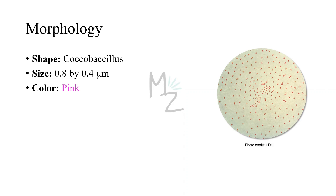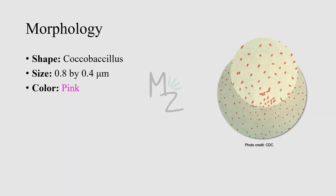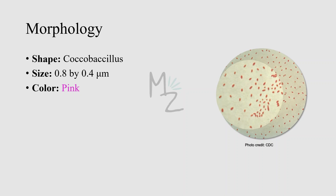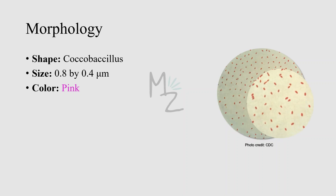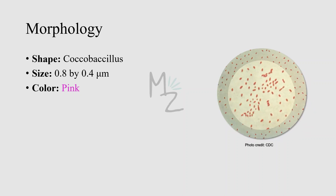Morphology: Bordetella Pertussis is a small, coccobacillary, encapsulated Gram-negative bacterium. It varies in size from 0.8 by 0.4 micrometers. It may be pink or red in color because it's Gram-negative. In this picture you can see Bordetella Pertussis — it is Coccobacillus. You can clearly see the coccobacillus shape — it's not a rod (bacillus) and not a sphere (coccus).